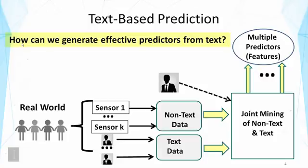Topics can serve as an intermediate representation of text, allowing us to design high-level features or predictors that are useful for predicting other variables. Although generated from original text data, topics provide a much better representation of the problem and serve as more effective predictors. Similarly, sentiment analysis can lead to such predictors as well, meaning these text mining algorithms can be used to generate predictors.